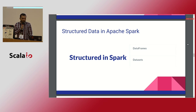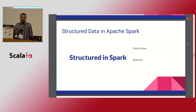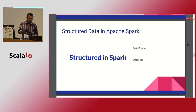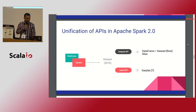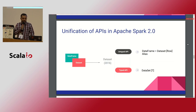In Spark, you have two choices: DataFrame and Dataset. In 2016, the untyped API was DataFrame and the typed API is Dataset of T. DataFrame is simply a type alias of Dataset of Row.